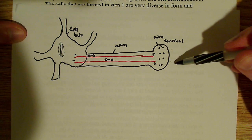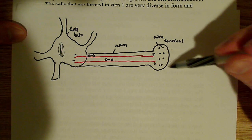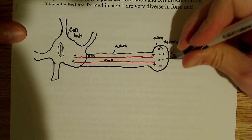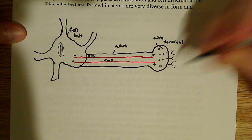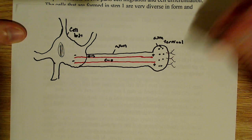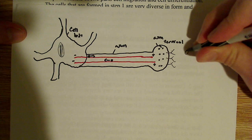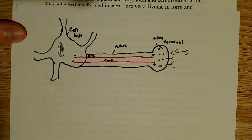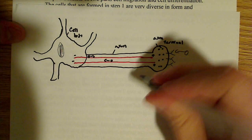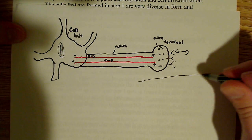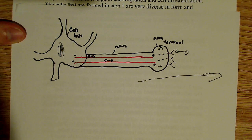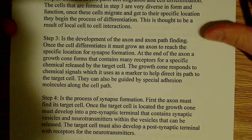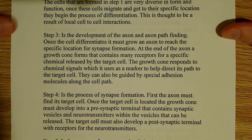If this were considered the growth cone, it's going out with receptors on it — looking for some ligand, something that's going to bind there. And when it binds, it's going to direct the way this thing moves, the direction it moves in. I just wanted to throw that out there as a little aside.